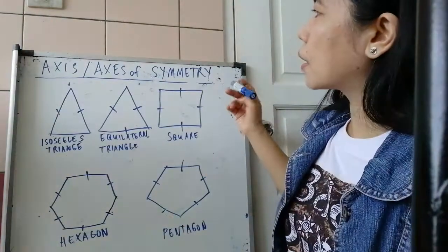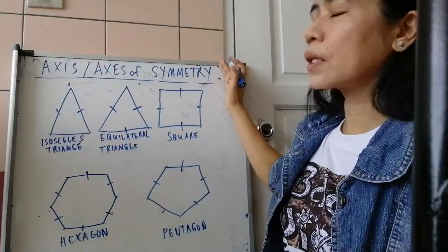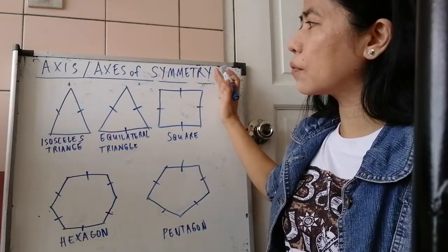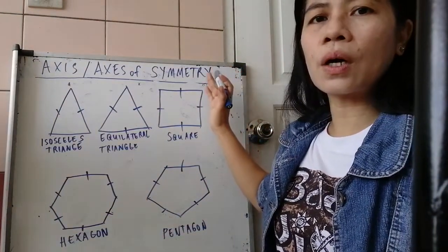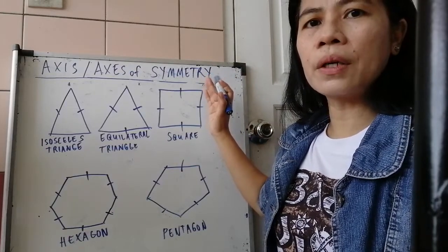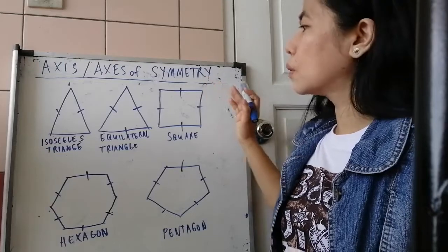So how do we draw the axis or axes of symmetry? When you say symmetry, it is how you can divide the figure into equal parts, or how do we draw so that it will have a mirror image.